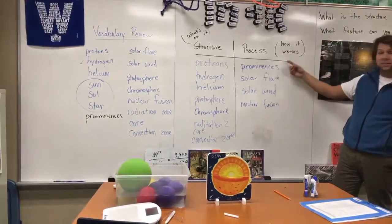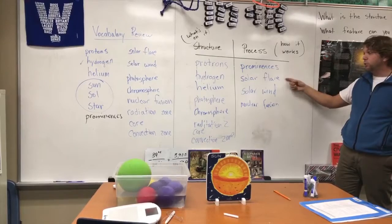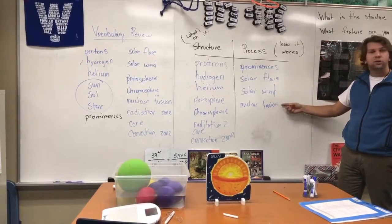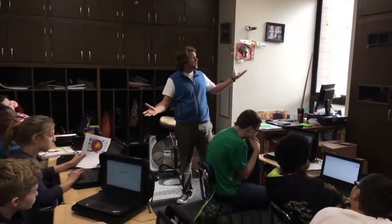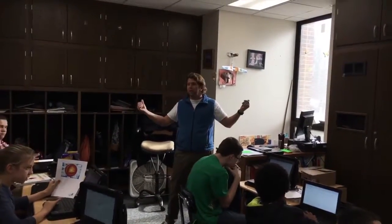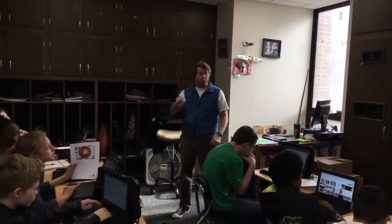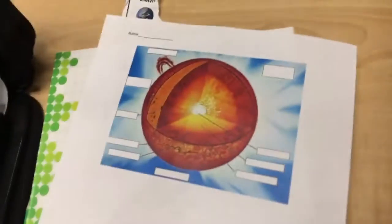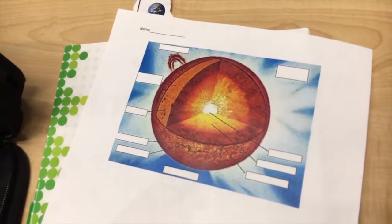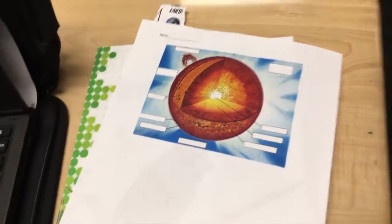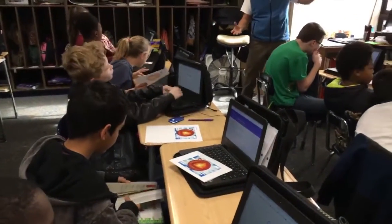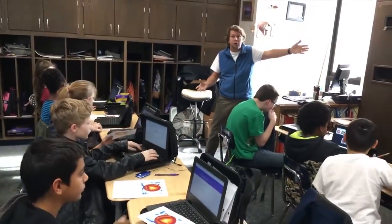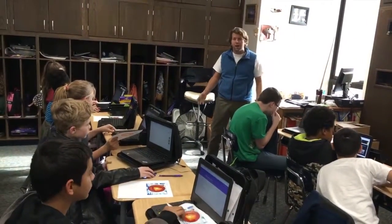And then the processes that the sun does: the prominences, solar flares, solar winds, and nuclear fusion. So while I stand in this solar radiation and absorb the energy, I want you guys to label the parts of the sun on your worksheet. Use the internet, find something, use our vocab. Finish this labeling the structures of the sun. Most likely we won't have solar flares, solar wind, or nuclear fission because those are processes.